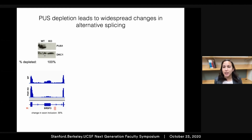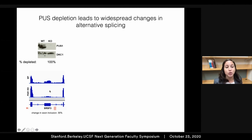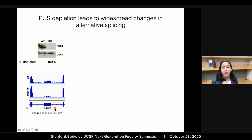I first generated a PUS1 knockout cell line, depleted PUS1, then isolated RNA and performed RNA sequencing to look for differential splicing in the knockout compared to the wild-type cells. Here's an example showing a cassette exon that's included in the presence of PUS1 and skipped upon PUS1 knockout. I've highlighted the location of the pseudouridines in the intron downstream of this regulated exon.